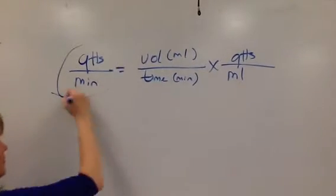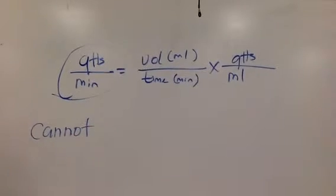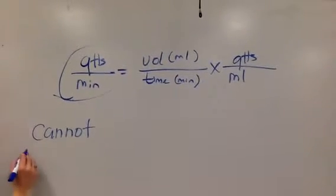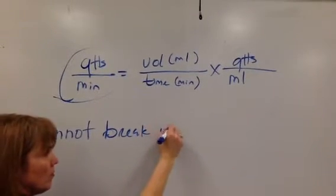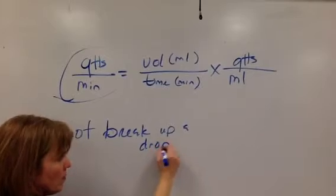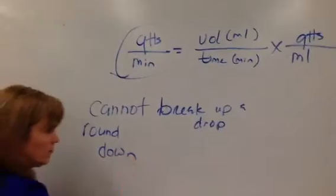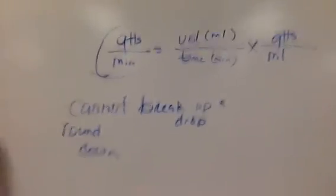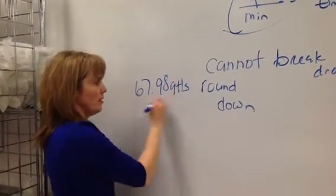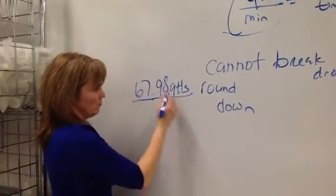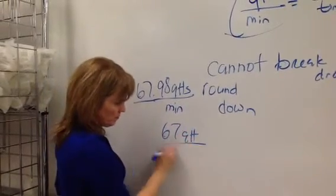For drops per minute, since we cannot break up a drop, you round down. So, if you have 67.98 drops per ml, or drops per minute, you're going to round that back down to 67 drops per minute.